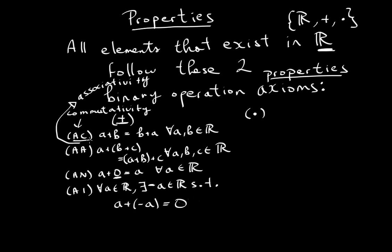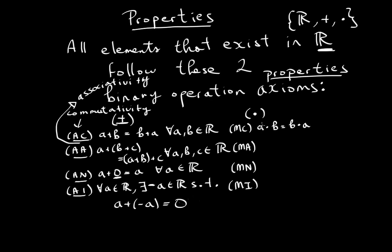So the four additive axioms are: additive commutativity, additive associativity, additive neutral, and additive inverse. The multiplication axioms mirror these. Multiplicative commutativity states A times B equals B times A, for all A and B in the reals. The comma between A and B translates to 'and.'